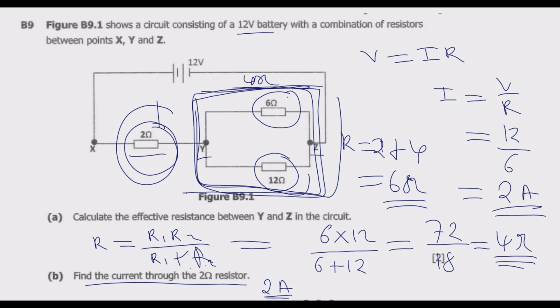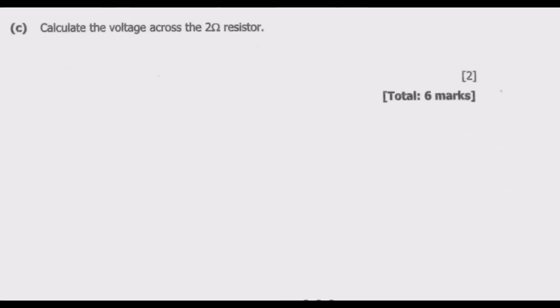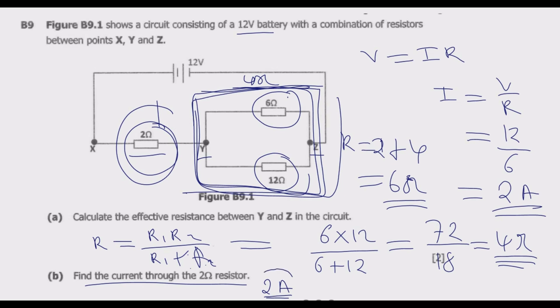You need to take note of those key points. Then C: Calculate the voltage across the 2 ohms resistor. Remember we just found the current passing through this resistor in this question, which is 2 amps.